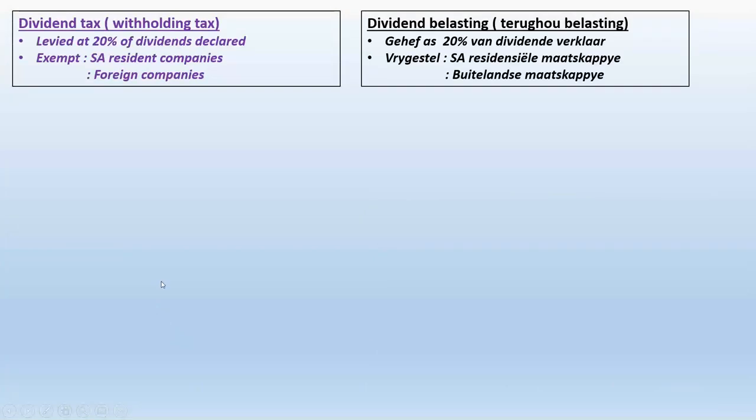Something different from income tax is dividend withholding tax. This is a tax that shareholders pay to the receiver of revenue based on the dividend they receive from the company. It works similarly to PAYE: although the shareholder is responsible for paying the 20 percent tax on the dividend, the company administers this payment on their behalf. Once a company declares a dividend, it holds back 20 percent and pays that over to the receiver of revenue on behalf of the shareholder.